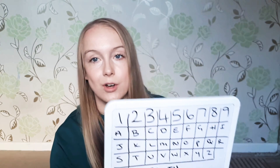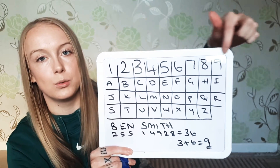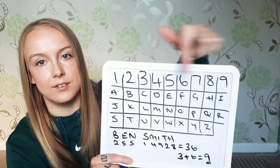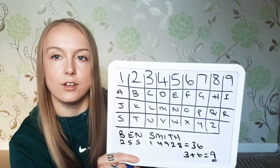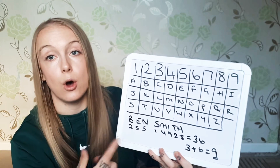I do have a video on life path numbers that you can go back and watch if you don't know yours already. To calculate your destiny number you need your full birth certificate name. It doesn't matter if you only had this name for a day or if you changed it — whatever was on your birth certificate when you were born, that's the name we're using. You'll want to get pen and paper or use your phone, and we're going to use what is called a Pythagorean letters and numbers chart. It's numbers one to nine with the alphabet underneath — A to I, J to R, S to Z.